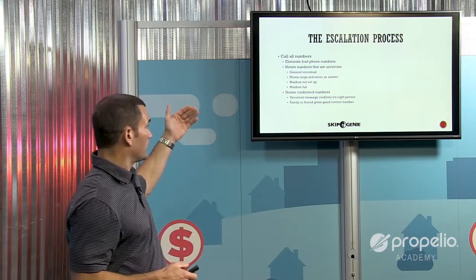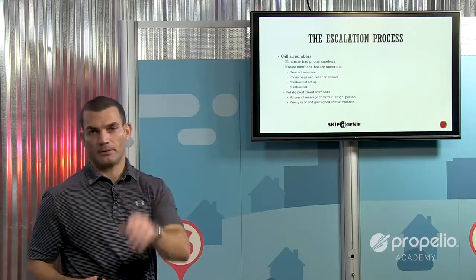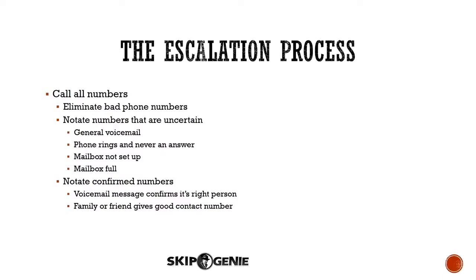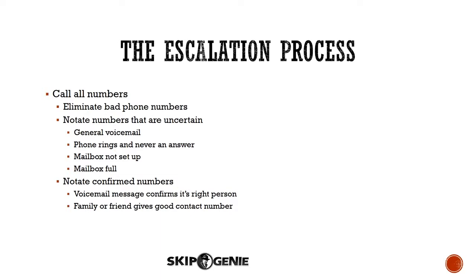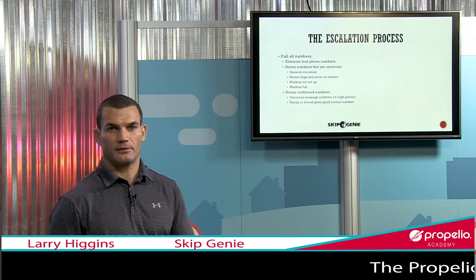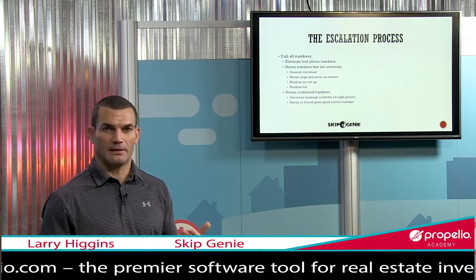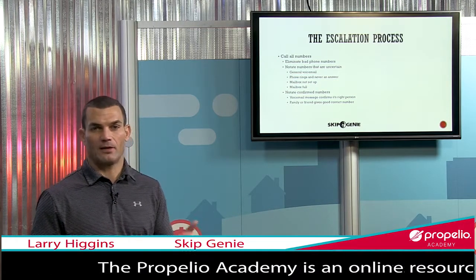So once you get your report, just start dialing all those numbers. As you're going through, obviously you want to eliminate and remove the bad numbers. So if you have to go back through later and make phone calls for this person, you're not going to waste valuable time calling bad numbers. You're going to have a lot of what I call questionable or uncertain numbers — numbers that are working, but the phone either rings and rings with nobody answering, maybe you get a generic voicemail where they just say 'leave a message.' You don't know who it is. You could also get mailbox full, mailbox not set up, or 'this subscriber is not taking calls right now.' So you'd want to notate it as a working number — you just don't know if it's the right number.